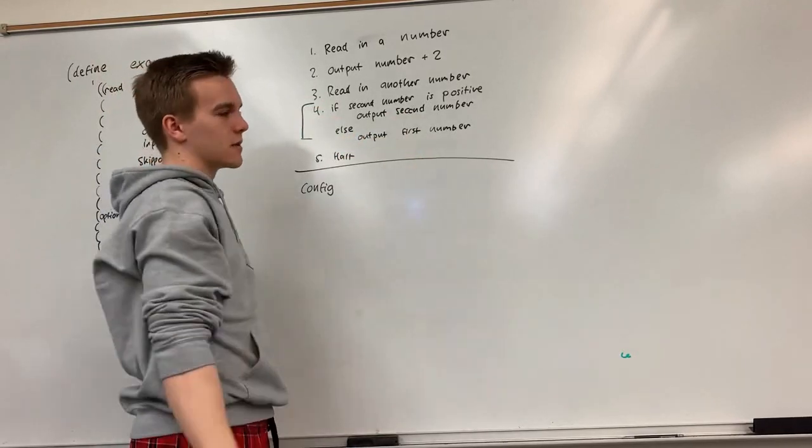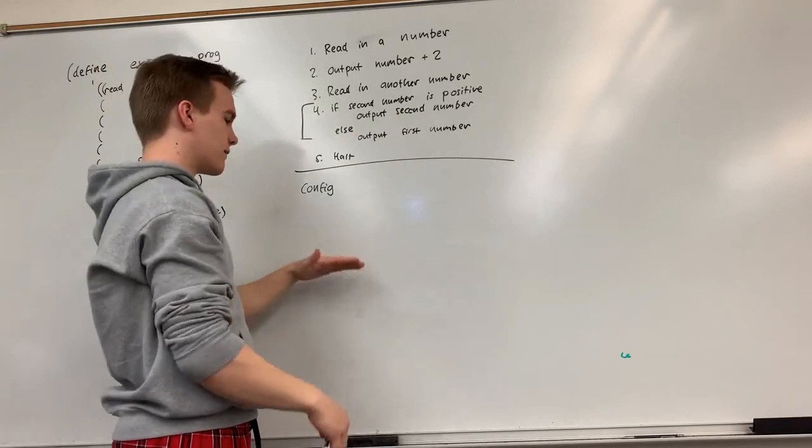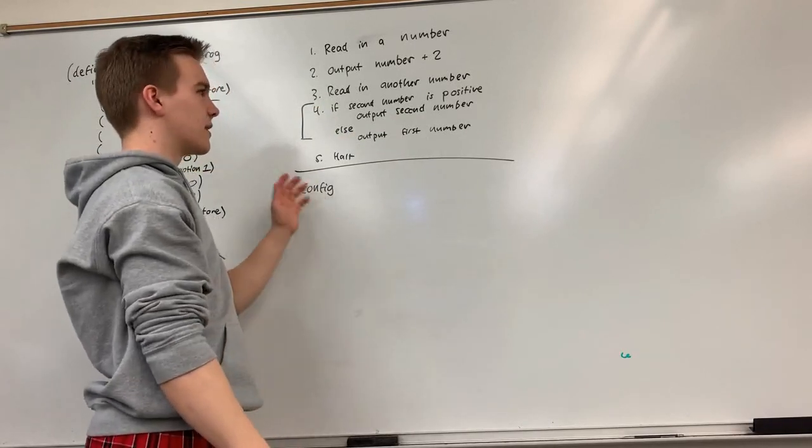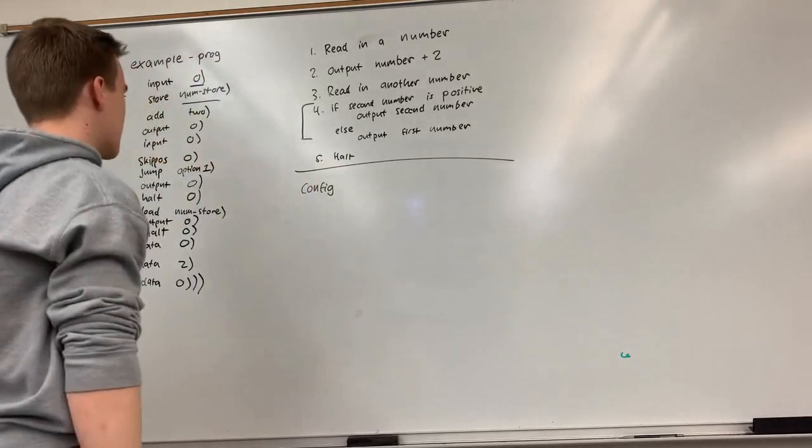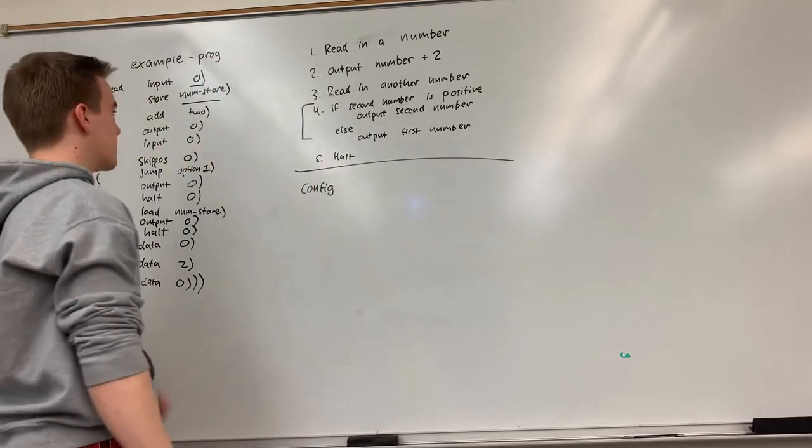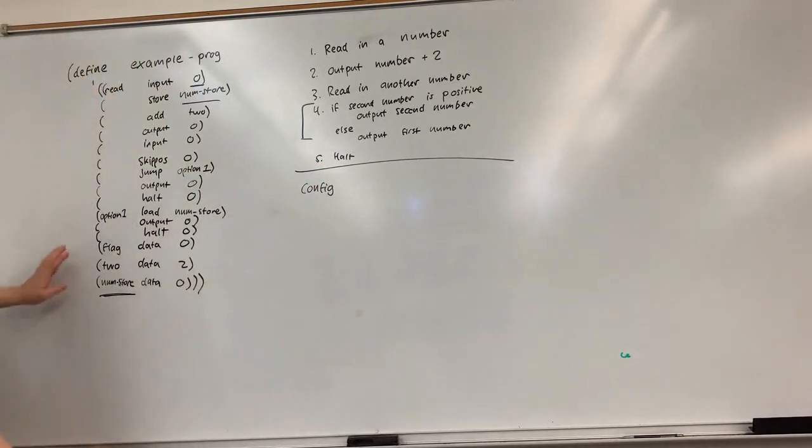So we need to be able to store numbers, do conditionals, have a way of checking some input and then at the end we're just going to halt. So I think it's best to walk through this with an example. My code is over here. This is what your code might look like in Racket but we'll just walk through it with an example.